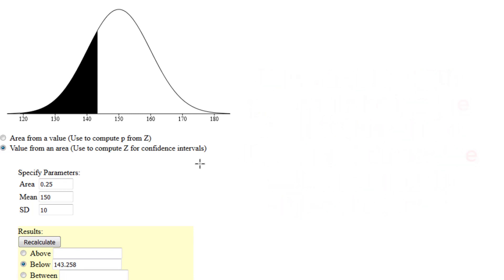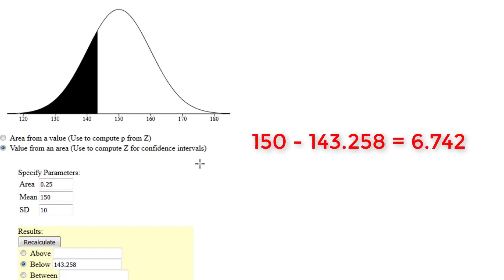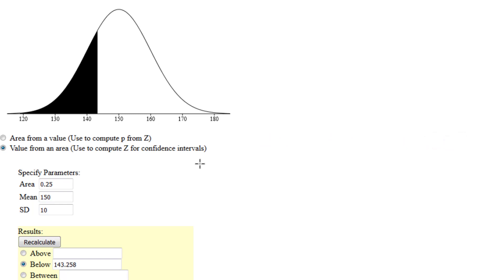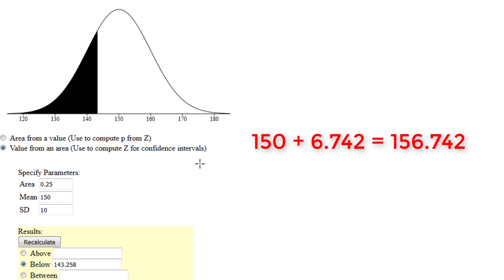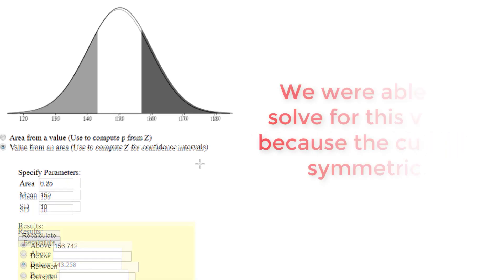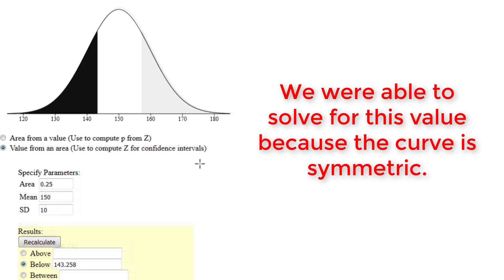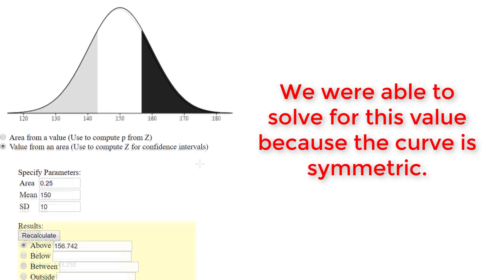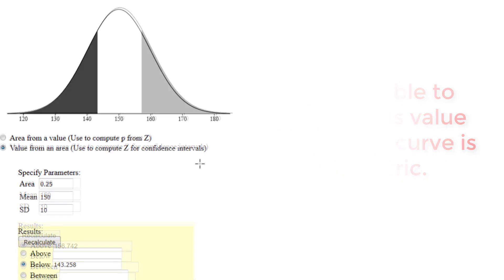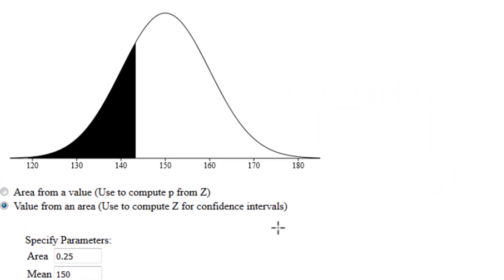For our problem, the lower 25 percent is 6.742 below the mean. That means the upper 25 percent is 6.742 above the mean, so our answer will be 156.742. This is due to the rules of symmetry — the lower 25 percent must be equal distance away from the mean as the 75th percentile.